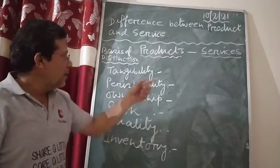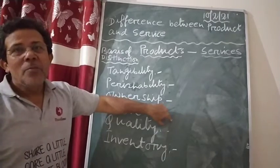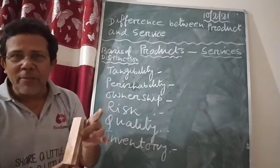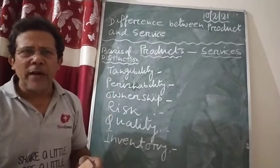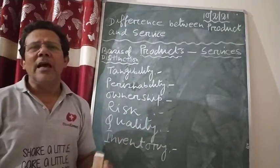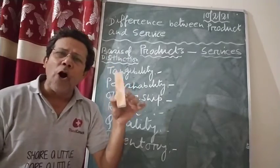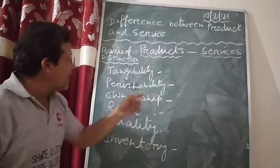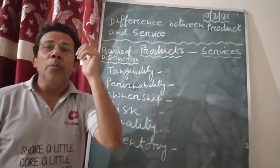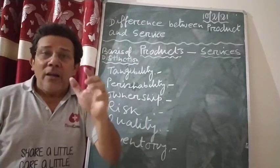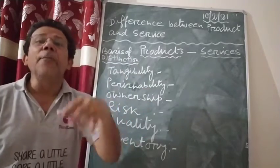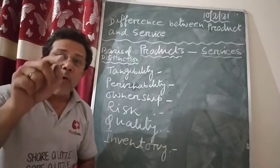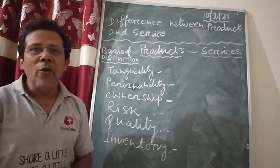The next point is risk. Products have less risk because a product can be replaced. For example, suppose I bought this duster from you and found something wrong with it — maybe in the surface, maybe somewhere else. I can easily go back and tell you there is a defect, and you will return it. That is why products have less risk — because products can be exchanged or replaced.